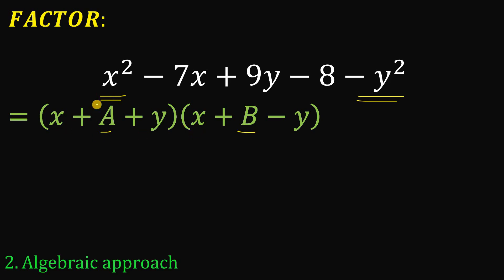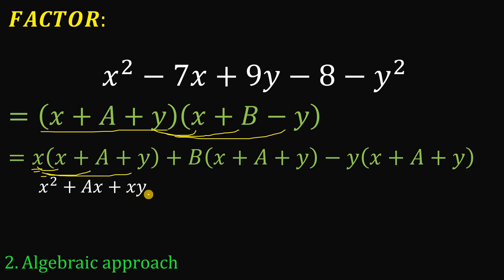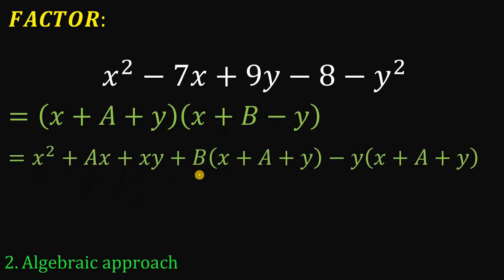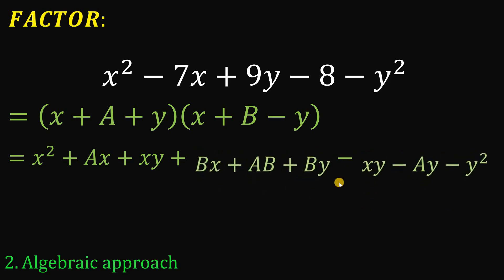The goal is to find a and b using chunk multiplication. Distributing x across x, a, and y gives x squared plus ax plus xy. Distributing b across x, a, and y gives bx plus ab plus by. Distributing negative y across x, a, and y gives negative xy minus ay minus y squared. Notice the xy and negative xy terms cancel to zero.